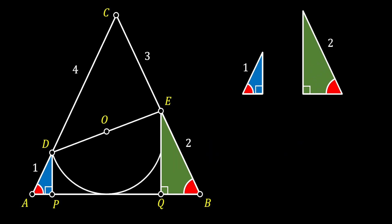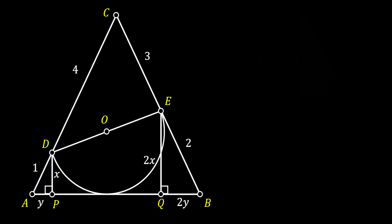So our blue and green triangles have two congruent angles, which means those two triangles are actually similar triangles. Let's label the legs of our blue triangle as x and y. Since the hypotenuse of the green triangle is twice as big as the hypotenuse of the blue triangle, and those two triangles are similar, the legs of the green triangle are twice as big — giving us 2x and 2y — and we substitute those values into our sketch.